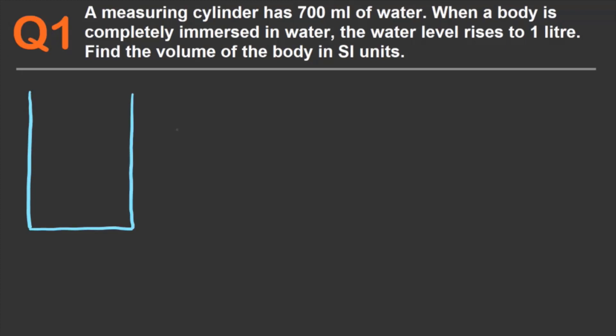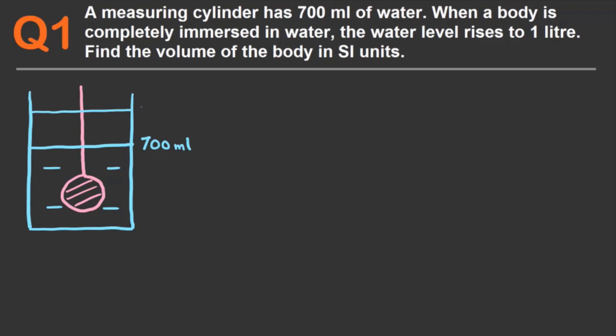Let's visualize the question with the help of a diagram. This is our measuring cylinder with 700 ml of water in it. When a body is completely immersed in the water, the water level rises to one liter. So what is the volume of water displaced by the body? As you can see in the diagram, it's going to be this much water.